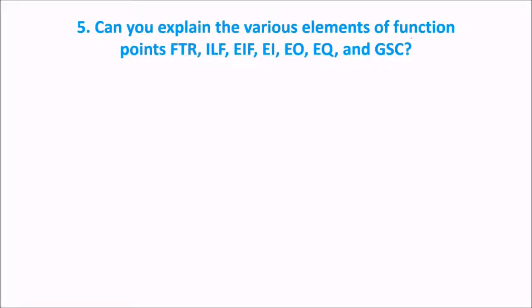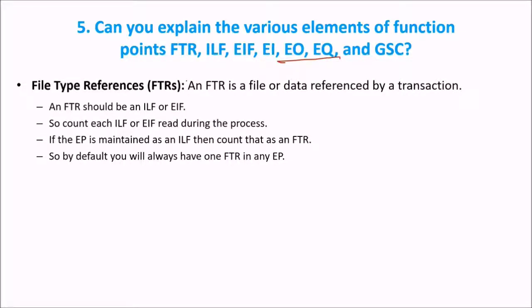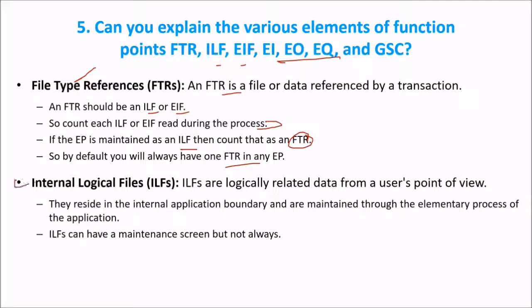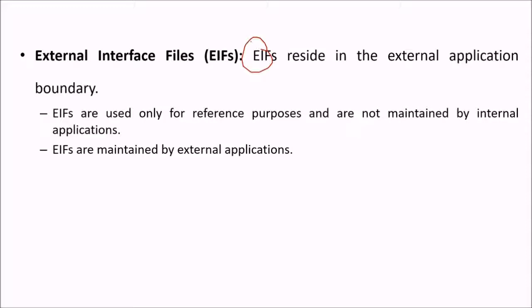Can you explain the various elements of function points — FTR, ILF, EIF, EI, EO, EQ, and GSC? FTR is file type references: a file or data reference via a transaction. FTR should be an ILF or EIF; count each ILF or EIF during the process. If the EP is maintained as an ILF, count that as a FTR also. ILF — internal logic files — are logically related data from the user's point of view; they reside in the internal application boundary and are maintained through the elementary process of the application. EIF — external interface files — reside in the external application boundary; they are used only for reference purposes and are maintained by external applications.